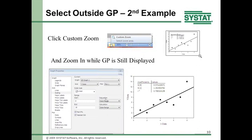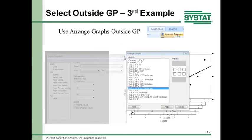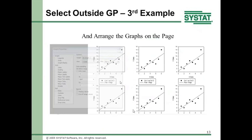A third example: outside graph properties, I clicked on the graph and did Control-C to copy it, then Control-V five times to make five copies — now there are six graphs on the page. I clicked on the graph page ribbon, clicked arrange graphs, selected six-up two-and-a-quarter by two-and-a-quarter landscape, and clicked Apply. All of this happened outside of graph properties, yet the graph properties panel remained open throughout.